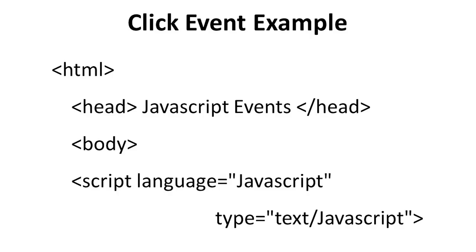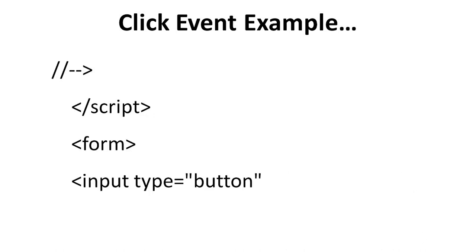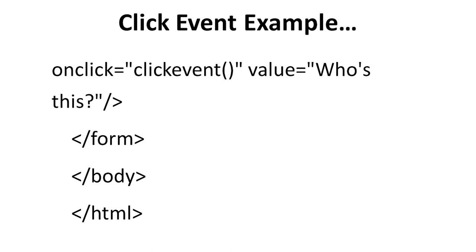Click event example: we have an HTML tag, then a head section with the title 'JavaScript Events', then the head tag is closed. In the body, we have a script tag with language equals JavaScript and type equals text/javascript. Inside, a function called clickEvent uses document.write to output 'Welcome to this'. Then the script is closed. A form tag contains an input of type button with onclick equals clickEvent and value equals 'Who is this'. Then the form, body, and HTML tags are closed.